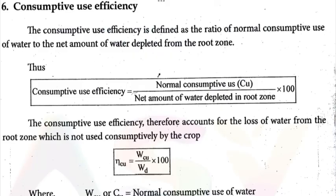The last type of efficiency is consumptive use efficiency. Consumptive use efficiency is the ratio of normal consumptive use (CU) divided by the net amount of water depleted in the root zone, multiplied by 100%.